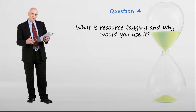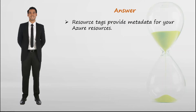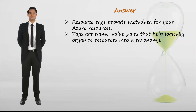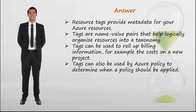What is resource tagging and why would you use it? Resource tags provide metadata for your Azure resources. Tags are name-value pairs that help logically organize resources into a taxonomy. Tags can be used to roll up billing information, for example the costs on a new project. Tags can also be used by Azure Policy to determine when a policy should be applied.